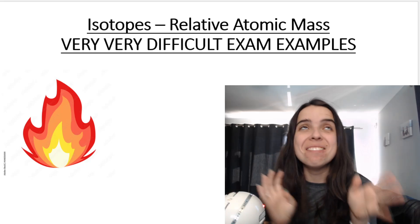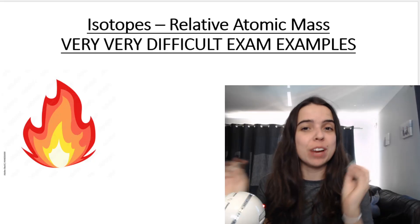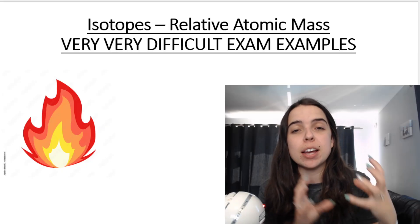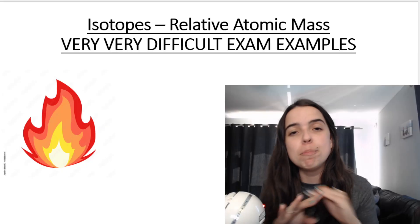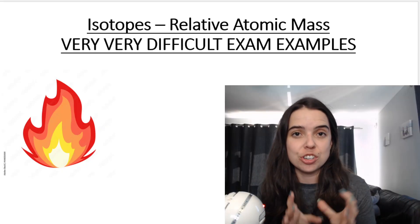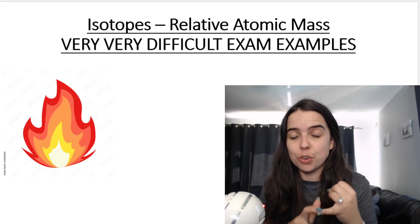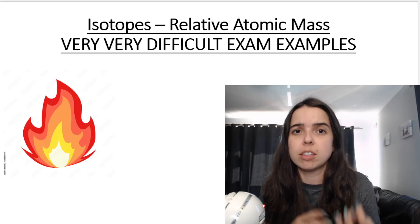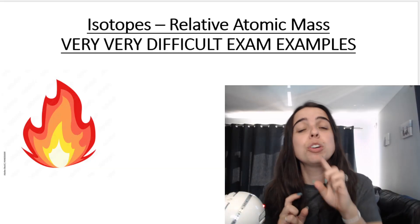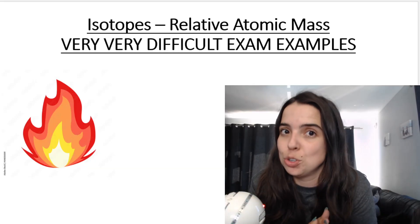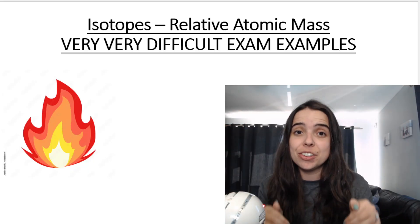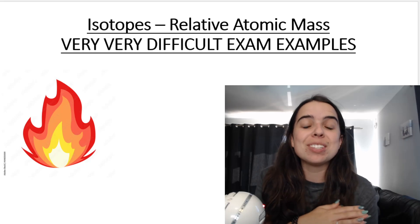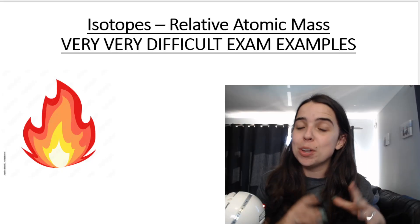In this video we will be going over very difficult isotopes relative atomic mass examples. If you missed my first two videos: in the first video I went over what isotopes are, relative atomic mass, and we practiced a very basic standard question. In the second video I practiced kind of challenging ones. These are very difficult, so if you've missed the first two videos you have to go watch those first. If you're ready for level three very difficult exam examples, let's jump right in.